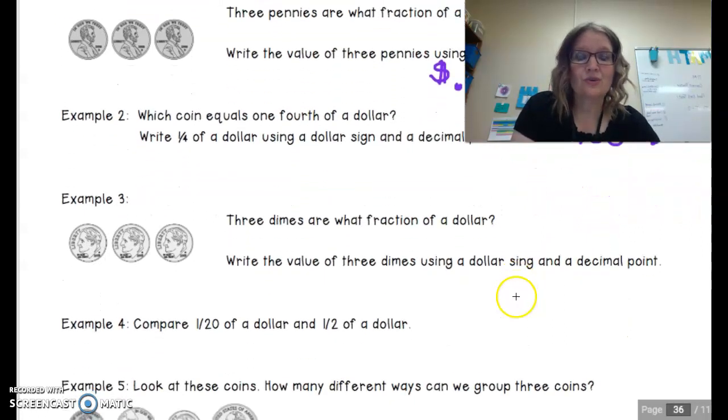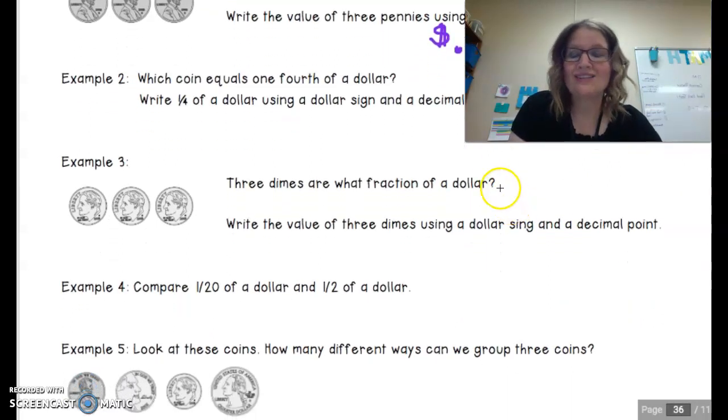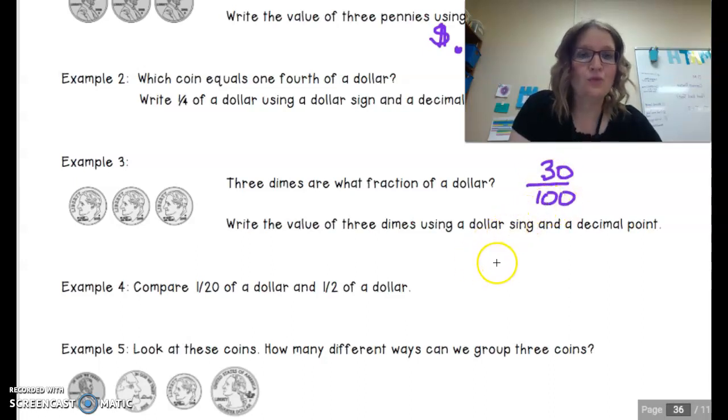Our next question, three dimes are what fraction of a dollar? First off, we know that there are 100 cents in a dollar. We know that we have three dimes and that would be 30 cents, 30 out of a dollar. And we would write this as 30 cents in decimal form.